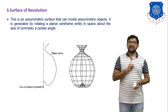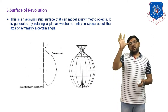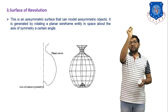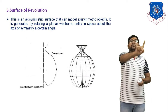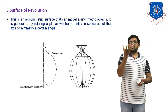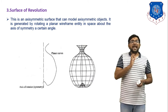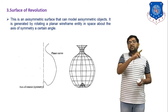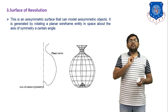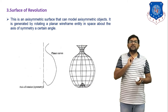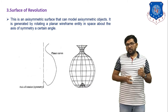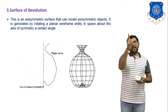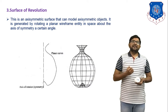Next is surface of revolution. If we have one cross-section view and we rotate that cross-section view about some particular axis of reference by 360 degrees, one surface is generated. That is the meaning of surface of revolution. This is an axis-symmetric surface that can model axis-symmetric objects — meaning the shape is symmetric from the centerline on both sides. It is generated by rotating a planar wireframe entity in space about the axis of symmetry by a certain angle. For example, one planar curve rotated 360 degrees about a vertical reference axis generates the surface of revolution.